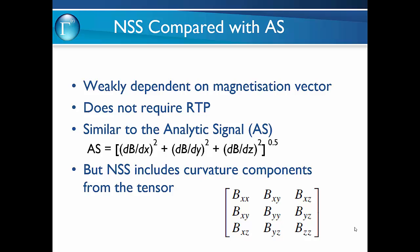Now let's look at the comparison of the normalised source strength and the analytic signal. Both are weakly dependent on the magnetisation vector and neither requires a reduction to pole. The analytic signal is derived from the horizontal gradients of the total field and the vertical gradient of the total field, whereas the normalised source strength is derived from the full tensor — that is, the gradients of each of the components and cross components — and as such has a lot more information present in it.